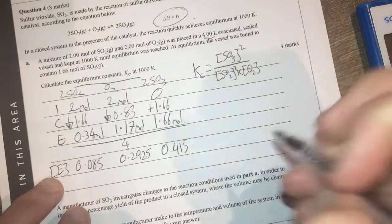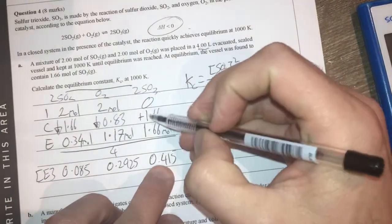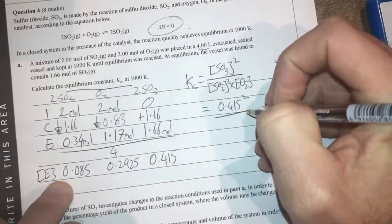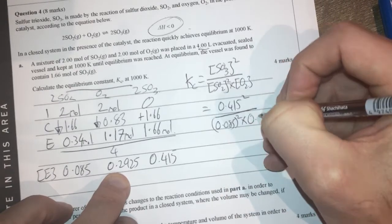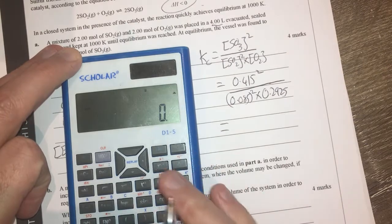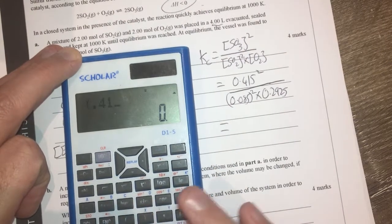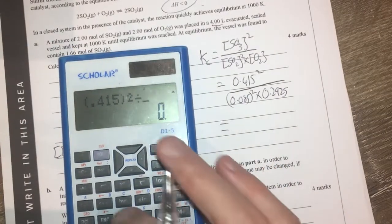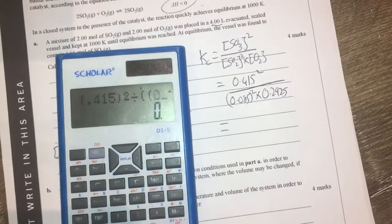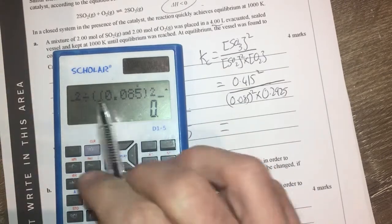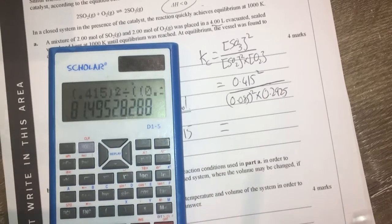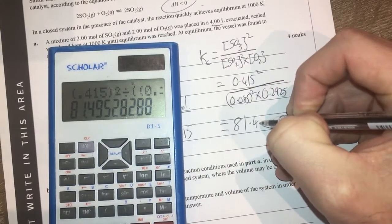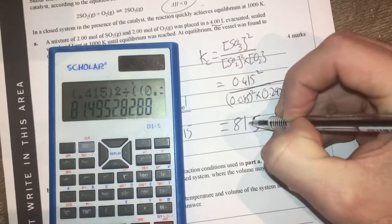So what I need to then do is bang all these numbers into this thing over here. So therefore my sulfur trioxide will be 0.415 squared divided by my sulfur dioxide which will be 0.085 squared times 0.2925. I'll do that in my calculator. This is a fun one. My ALDI calculator here is pretty basic but if I use brackets I should be able to do this. 0.415 bracket squared divided by bracket 0.085 bracket squared times 0.2925 bracket equals 81.5.